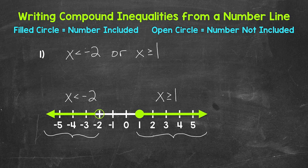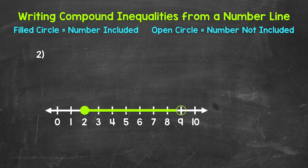Let's move on to number two. Let's take a look at number two and start by seeing if this is an OR or AND compound inequality. We have what looks like a line segment, just a section of a number line. We don't have any arrows or inequalities that necessarily pop out. This is what AND compound inequalities look like on a number line.